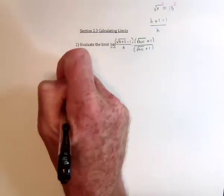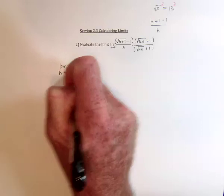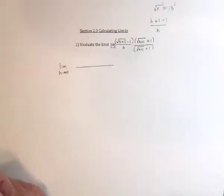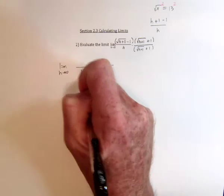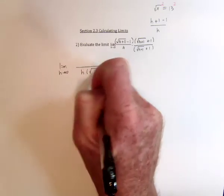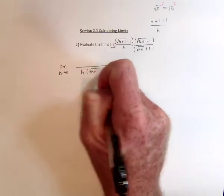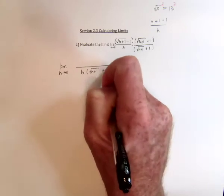So we're going to get the limit as h goes to 0. The denominator, don't multiply it out. Just write h times the square root of h plus 1, and then plus 1.